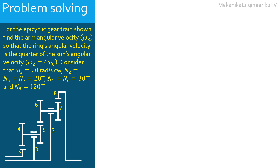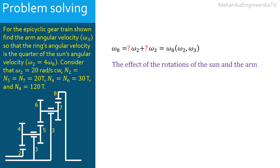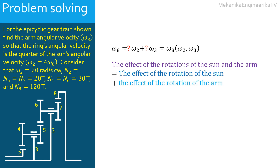First, we are going to establish the expression of ω₈, the angular velocity of ring 8, in terms of the angular velocities of the sun 2 and the arm 3. As the problem is linear, it is possible to use the superposition method. Thus, calculating the effects of the sun and the arm together is equivalent to calculating the effect of the sun alone and the effect of the arm alone, and then adding the two effects. In other words, ω₈ due to both rotations equals the sum of ω₈ calculated assuming the arm fixed (ω₃ = 0) and ω₈ calculated assuming the sun fixed (ω₂ = 0).